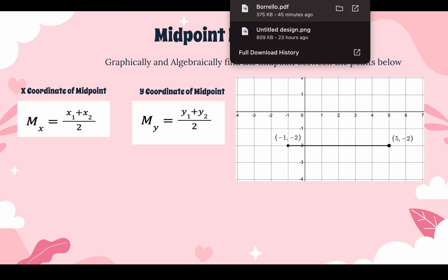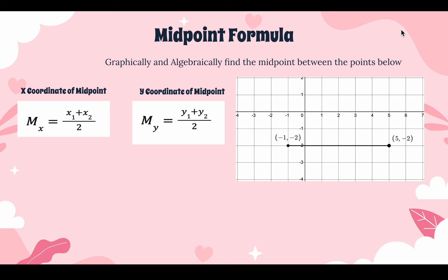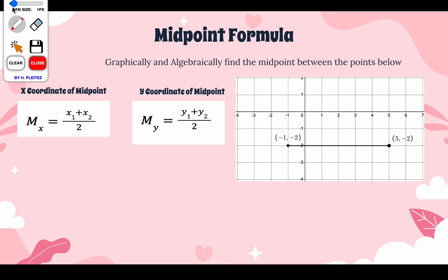Here's another example where we have some different coordinates — now we have some negative numbers involved, but the concepts stay the same. Let's label x1, y1 and x2, y2. Graphically, if I count the boxes, it looks like the midpoint is going to be around here, because we have 3 boxes on the left and 3 boxes on the right. So my midpoint is (2, −2).